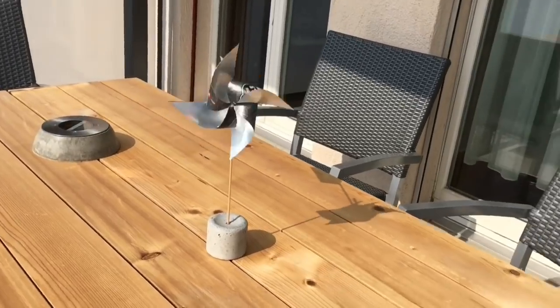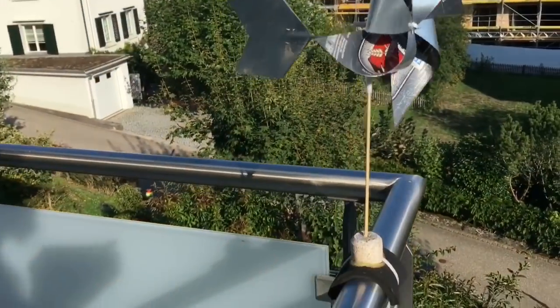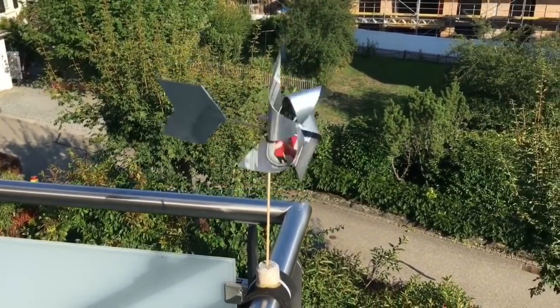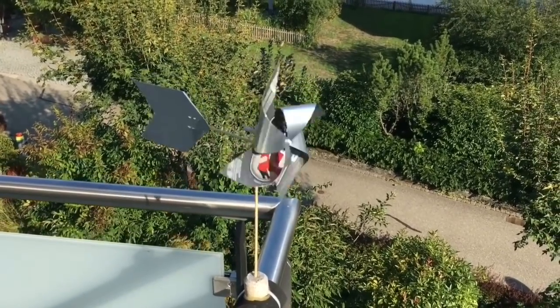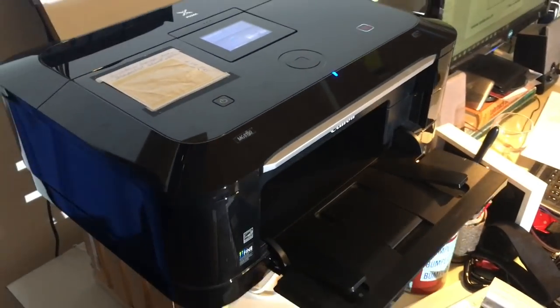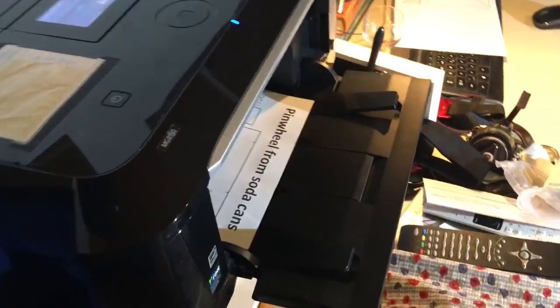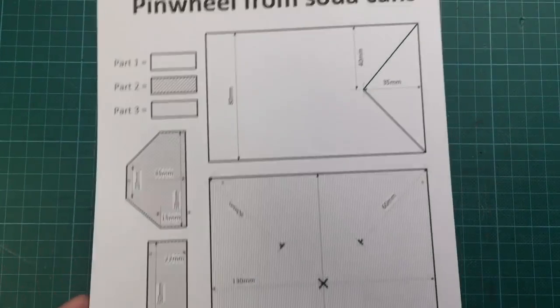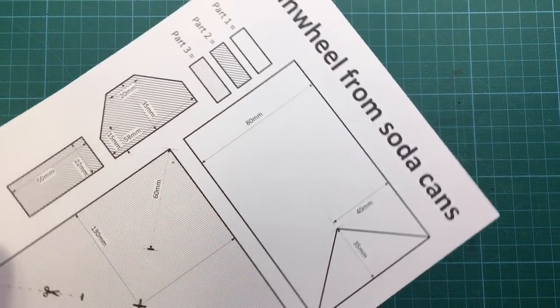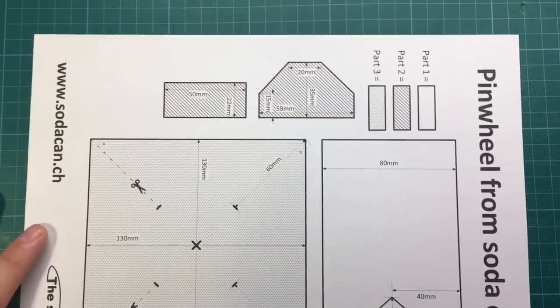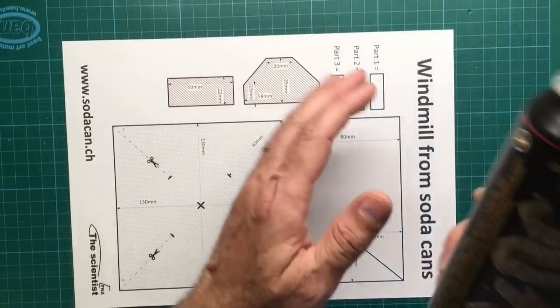And why does it have to be from soda cans? Because aluminum from soda cans is just the right material for this outdoor project that will face a tough life due to exposure to sun, rain, wind and other elements. Start by downloading the template for the aluminum parts. You can find the link to the template in the description of the video.